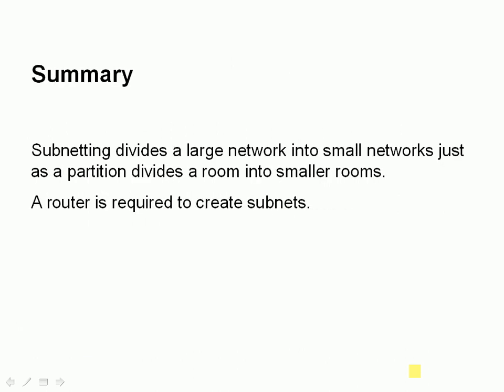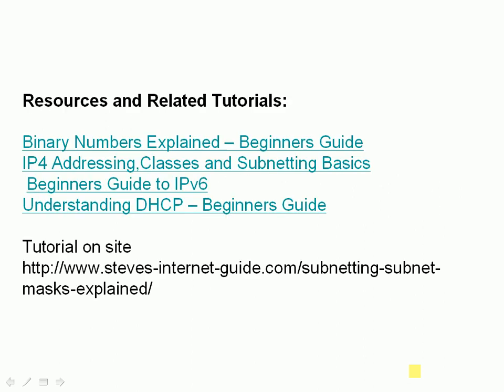Just to summarize: subnetting divides a large network into smaller networks, just as a partition divides a room into smaller rooms, and we do it to stop devices on the network interfering with each other. To create subnets, remember, we require a router — you can't have a subnet without a router. There's a written tutorial on the site covering worked examples, and I'm going to do another video totally dedicated to subnetting examples, because the best way to learn subnetting is by going through examples — not only worked examples, but also doing them yourself.